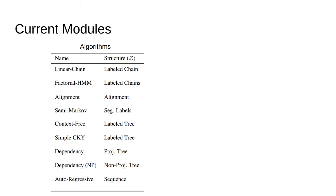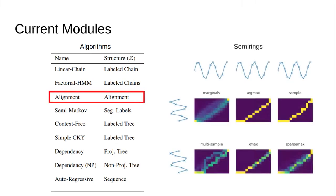As mentioned earlier, each algorithm is written so we can substitute in different semi-rings to compute different properties. In this example, we use dynamic time warping to align two sequences and show what the alignments look like under marginals, argmax, sampling, multi-sampling, k-argmax, and differentiable dynamic programming semi-rings — for instance, the sparsemax operator.